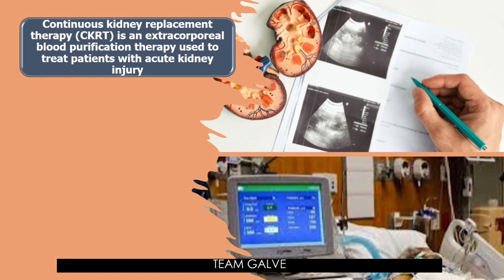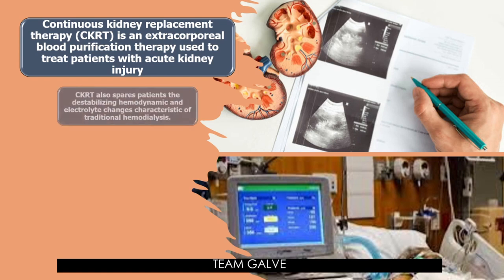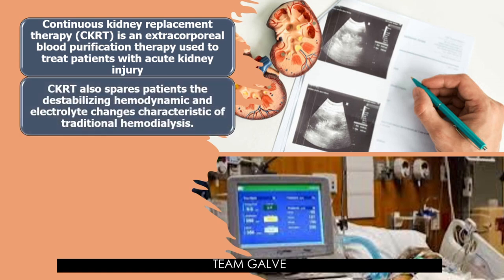The order may also be for 48 hours, depending on the patient's presentation and indication. CKRT also spares patients the destabilizing hemodynamic and electrolyte changes characteristic of traditional hemodialysis. The therapy is performed through a patient's dialysis catheter, which is typically placed in the subclavian, internal jugular, or femoral vein — these are the common areas for dialysis lines. It is important that the patient has a dialysis line in place.